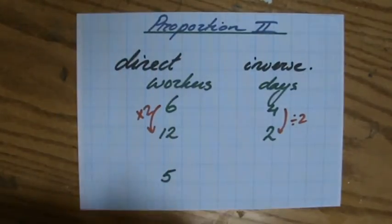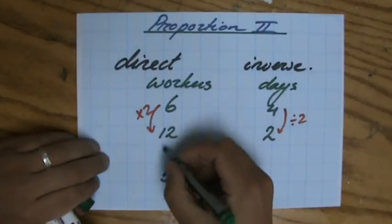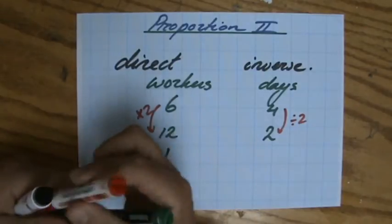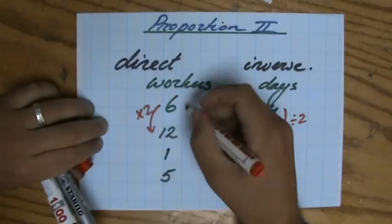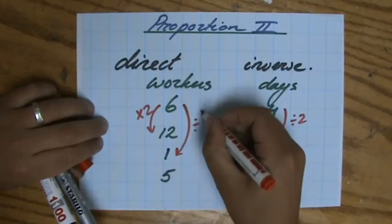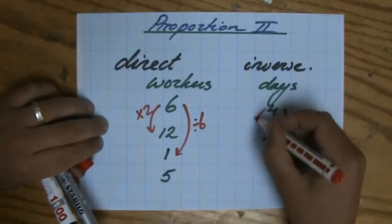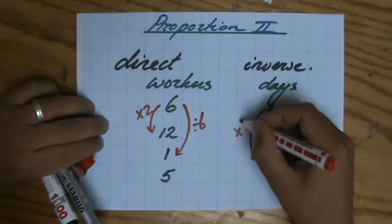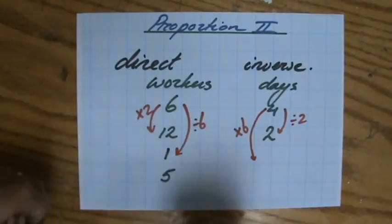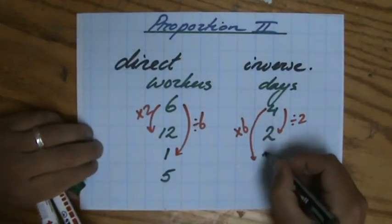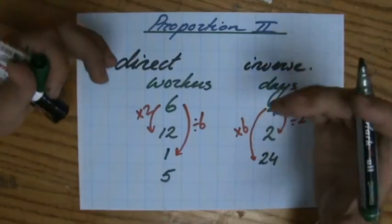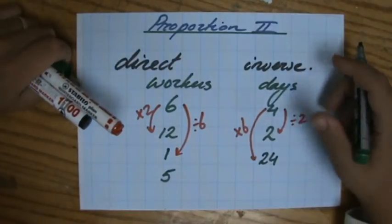I leave some space there deliberately because first I'm going to find out what if I'm all alone and I have to do the job all by myself. How long will that take me? So divide that by six. Yeah, I don't divide this by six. Now, then I have to times this by six because this is inverse proportion. So 24 days. It's going to take me 24 days to do the entire job all by myself.